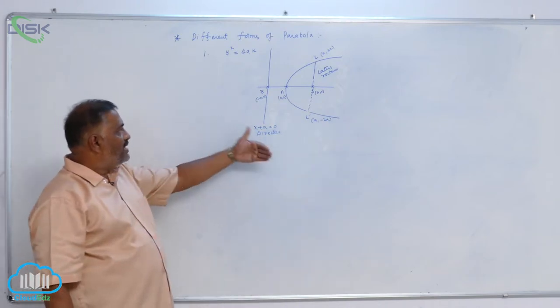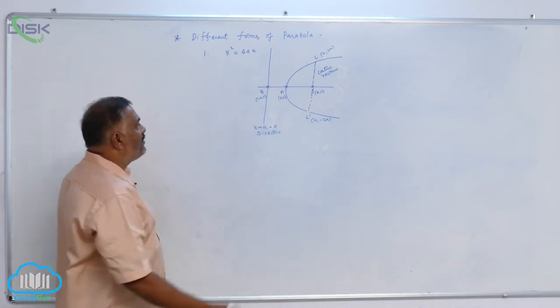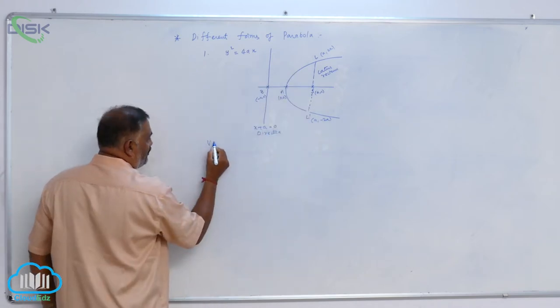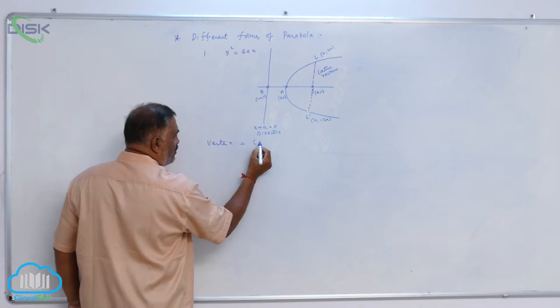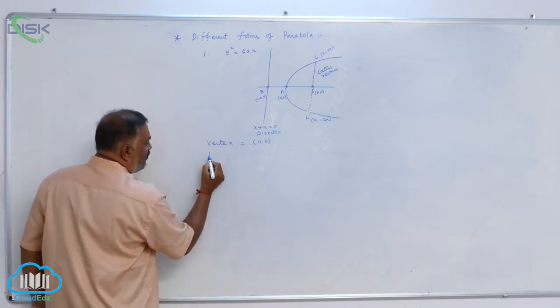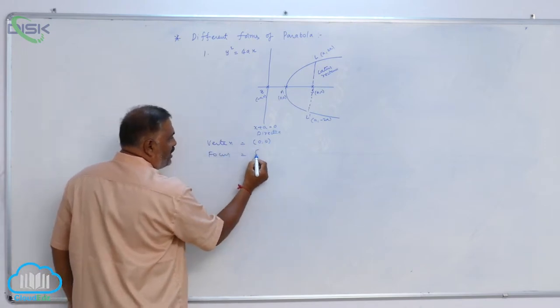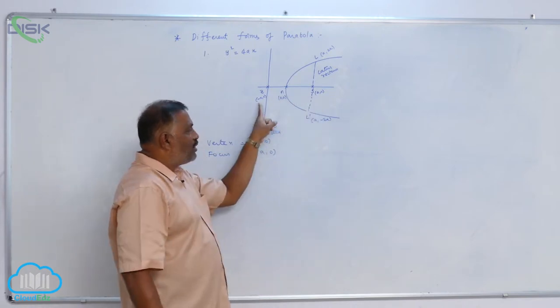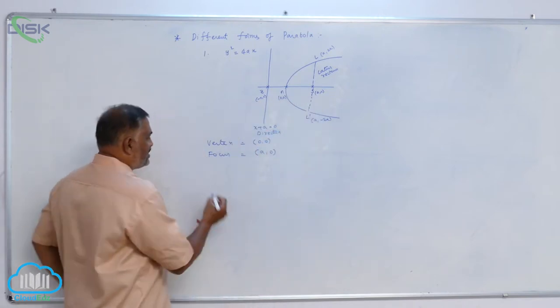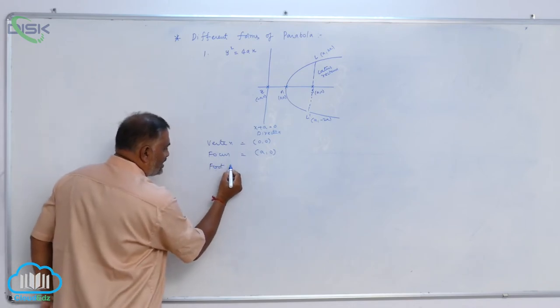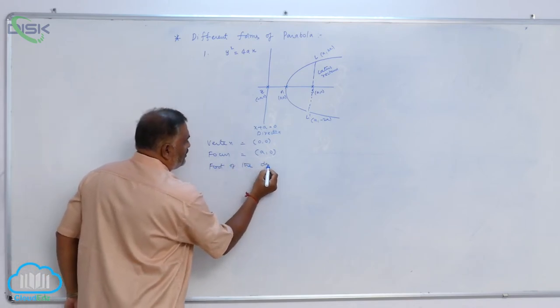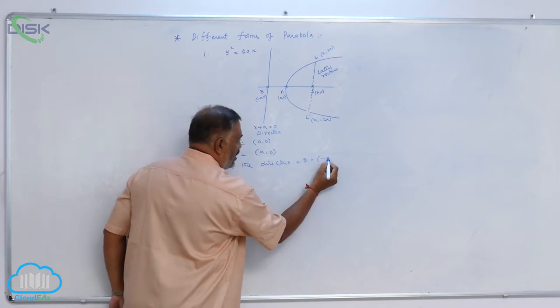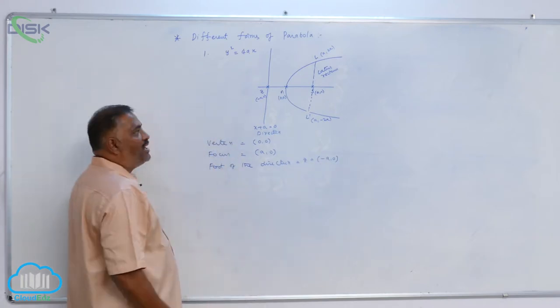Now we will discuss one by one. First of all, from the figure, vertex is equal to vertex is equal to zero, zero. Focus is equal to a, zero. Vertex, focus. Now this is foot of the directrix, foot of the directrix is equal to minus a, zero.